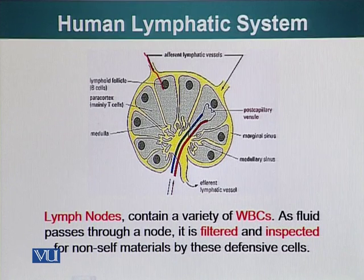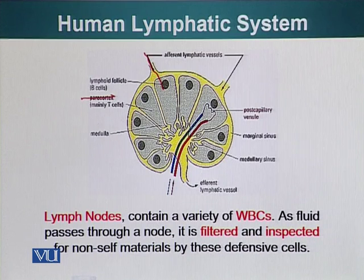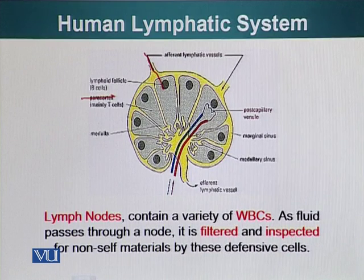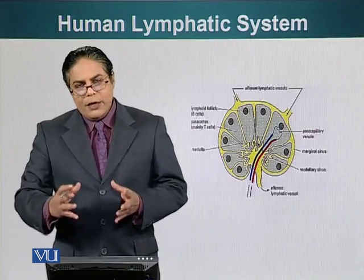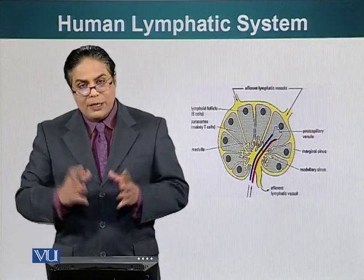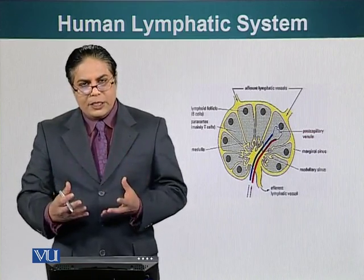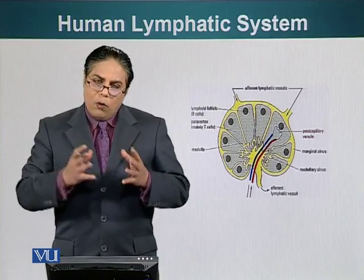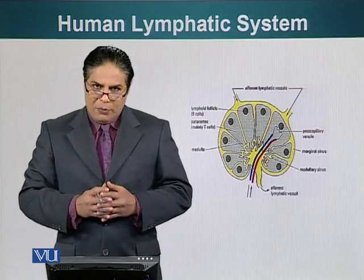In the lymphoid follicle area of the lymph node, the B cells reside, and the T cells are primarily present in the cortex. When the lymphatic fluid comes in, these cells inspect the contents of the lymph — so it is filtered and inspected. This is the structure of the lymph node. Next we will look at what the adaptive immune system is, what its responsibilities are, and most importantly, what are the components of the adaptive immune system.